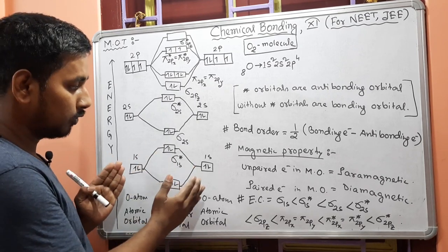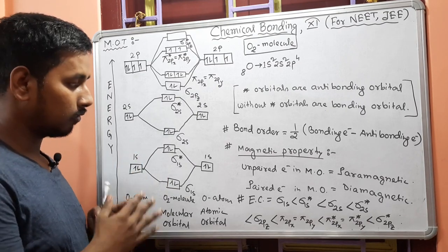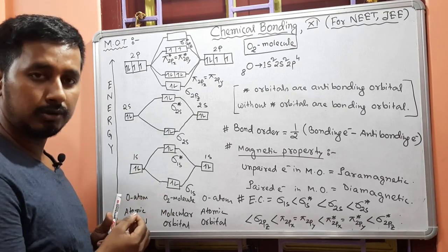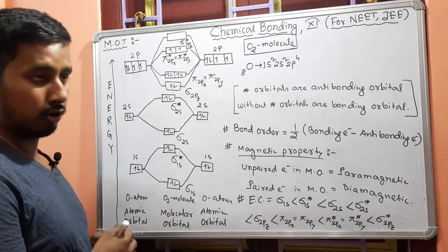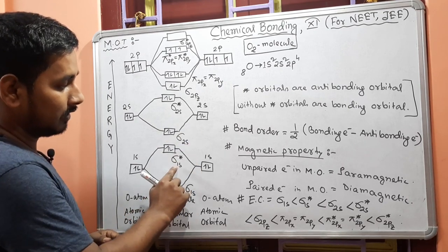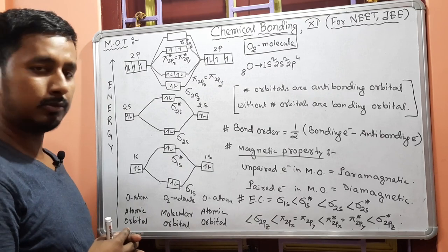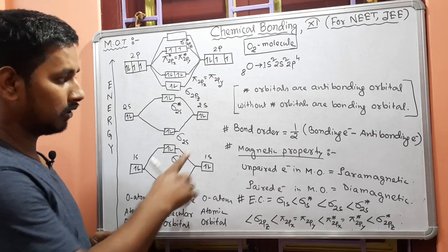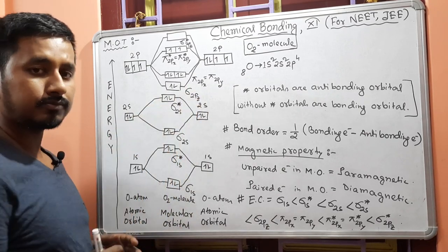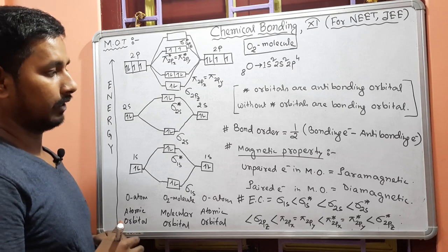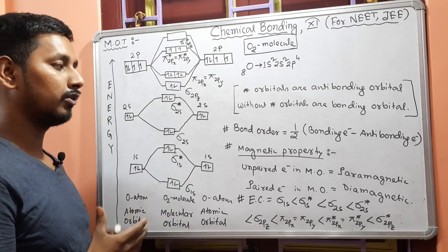Just as atomic orbitals, molecular orbitals also have two types: bonding molecular orbitals and anti-bonding molecular orbitals. The star notation indicates anti-bonding molecular orbitals, and without star indicates bonding molecular orbitals.